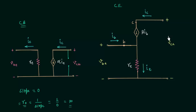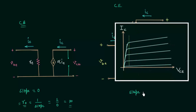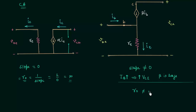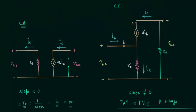In case of common emitter configuration, if you see the output characteristics, you will find the slope is not equal to zero, because IB, the base current, increases with increase in the output voltage VCE, and also beta is large. These are the two reasons for which slope is not equal to zero, and the output resistance is also not equal to infinity — it is very large, in orders of mega ohms. So still you can neglect the output resistance, but for precise calculation the output resistance is there. In problems, if it is given that you can neglect the output resistance then neglect RO, but generally we consider the output resistance in common emitter configuration.